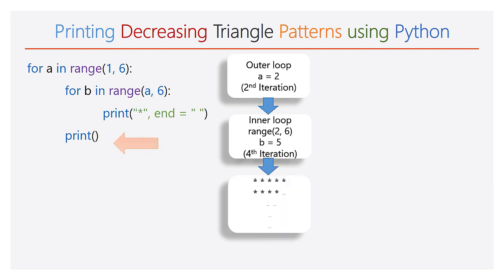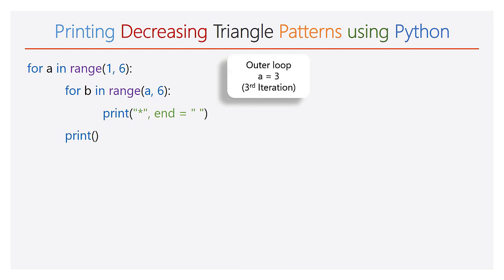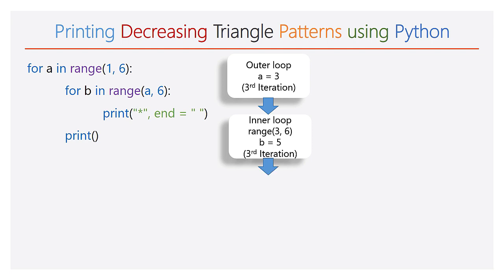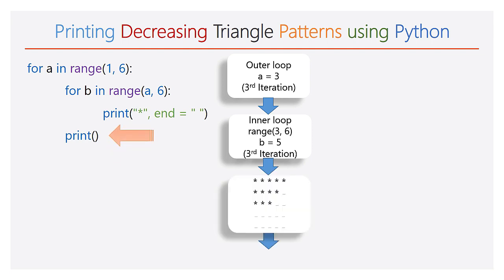Hence we will get 4 stars in the second line. After completing all 4 stars, the empty print function is executed. The cursor will take the new line. Then the execution will again go to the outer for loop and the value of a will be 3. The range of b will be 3 to 6. Now the inner for loop will iterate 3 times. During each iteration, 1 star will be printed. At the end of the inner for loop, 3 stars are printed. After completing the inner for loop, the print function is executed and the cursor will take the new line.